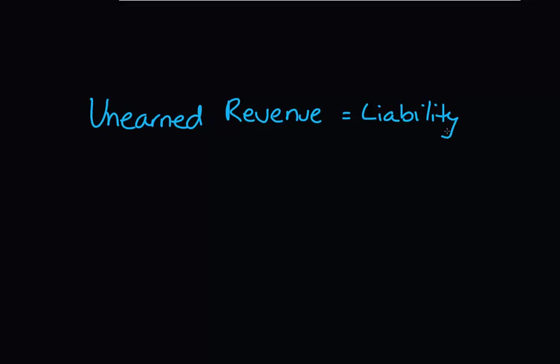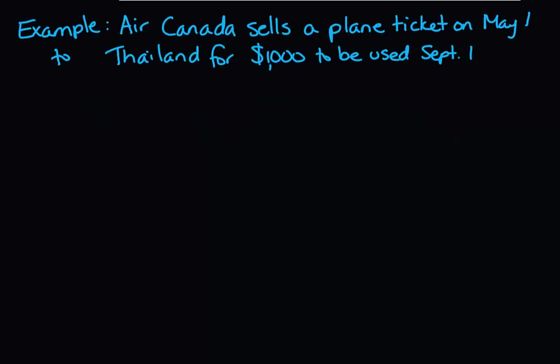Let's look at an example to demonstrate this. A good example of a company collecting fees in advance for services is an airline. So in our example, Air Canada sells a plane ticket on May 1st to Thailand for $1,000 to be used September 1st. On May 1st, our journal entry is going to look as follows, and remember, we're doing the journal entry from Air Canada's perspective.